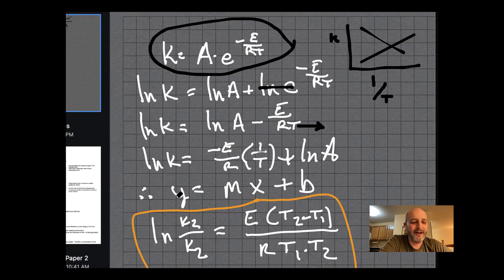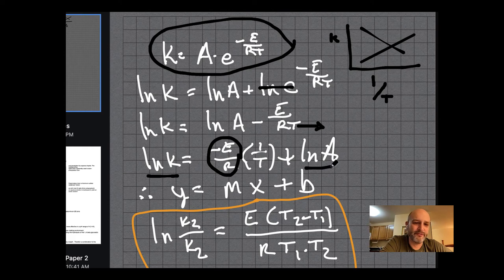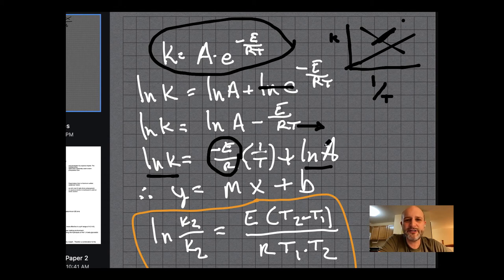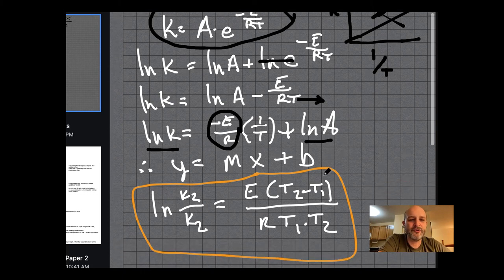If you rearrange it so you put this in the front and separate the T out, you've linearized this equation. If this were y equals mx plus b, you'd see that this would be the slope of your line and this would be the intercept. You'd be able to get the frequency constant, and since you know the gas constant, you'll get the activation energy by the slope, by how steep this thing goes, the rise over the run, the delta y over the delta x.